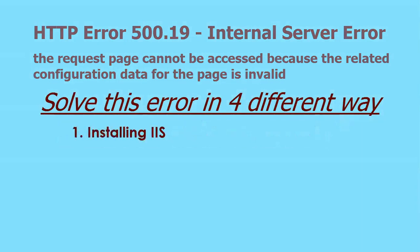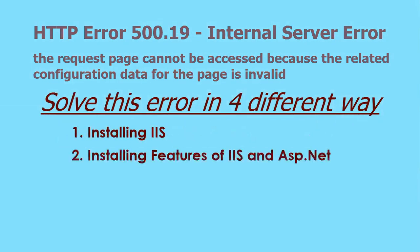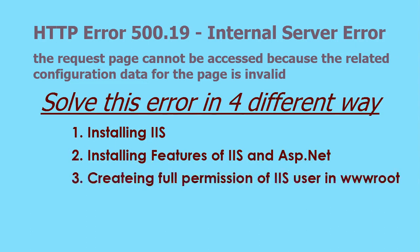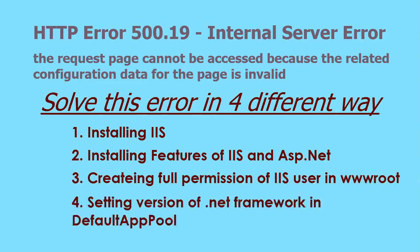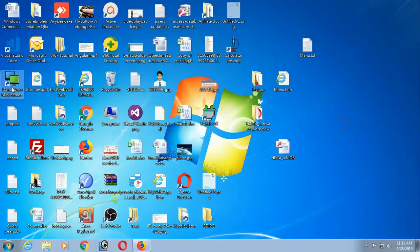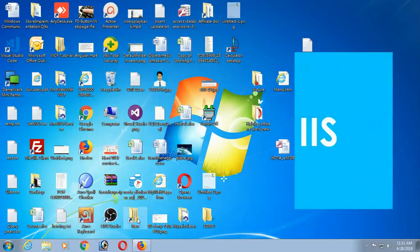We will solve this error in four different ways. The first one is installing IIS, the second is installing features of IIS, the third is creating full permission for the IIS user in wwwroot, and the fourth is setting the version of the .NET framework in the default app pool.